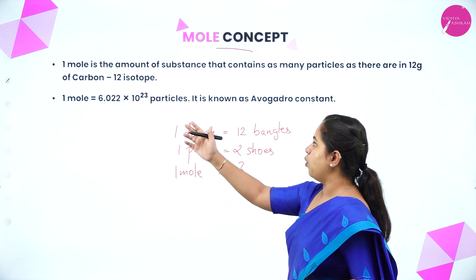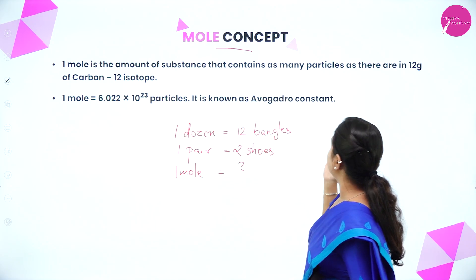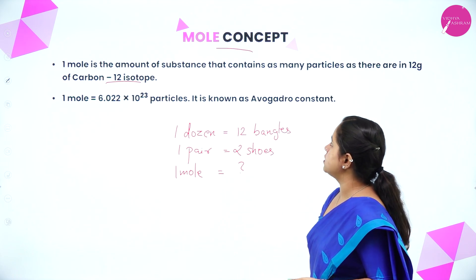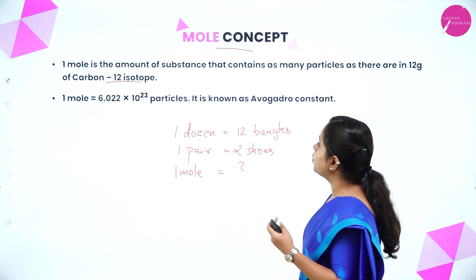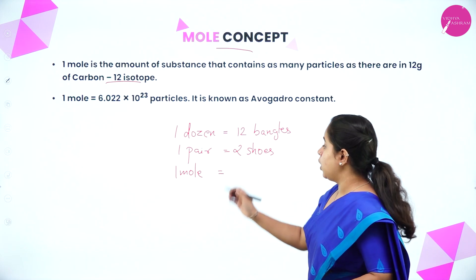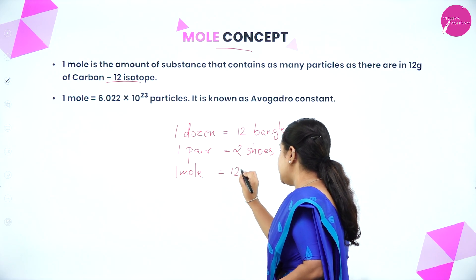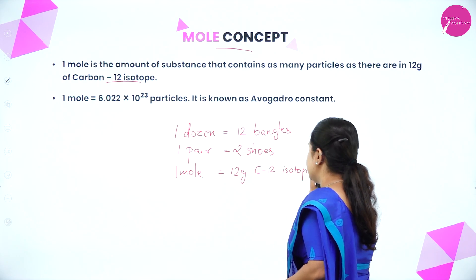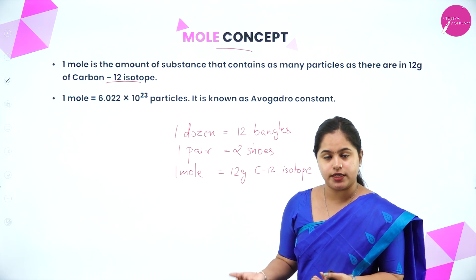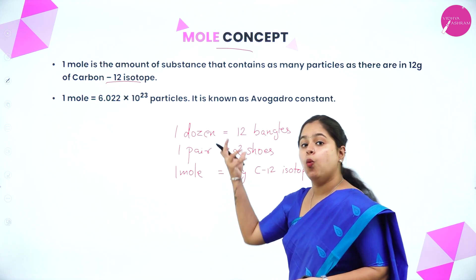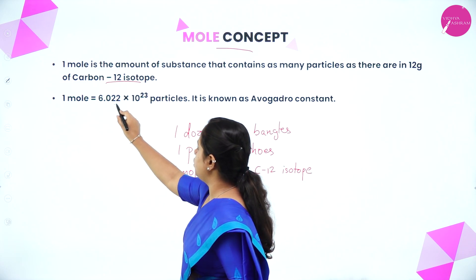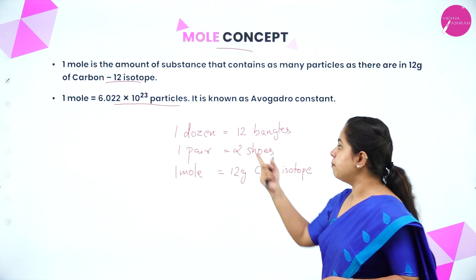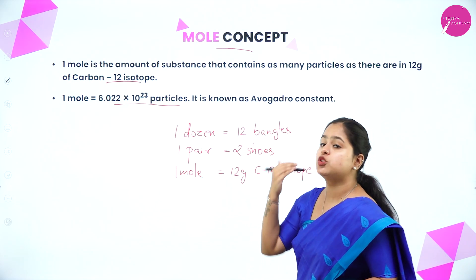One mole is the amount of substance that contains as many particles as there are in 12 gram of carbon-12 isotope. That means one mole of any substance will contain as many particles as there are in 12 gram of carbon-12 isotope. The number of particles in 12 gram of carbon-12 is 6.022 × 10²³ particles.